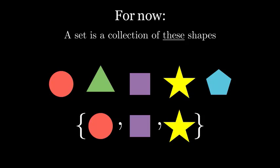The objects that are in a set are called its elements, so here the circle, square, and star are all elements of this set, while the triangle and pentagon are not. Note that we can list them in any order, so this set is the same as this one, or this one.